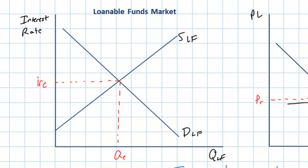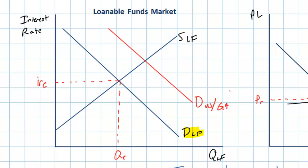The demand for loanable funds no longer represents only households and firms — it now also includes the government. When the government enters the market for loanable funds and borrows from private banks, the demand for loanable funds increases — we'll call this demand-with-G, indicating the increase in government spending financed through borrowing. This predictably drives up the equilibrium interest rate in the economy, as there is now more competition for the scarce funds available to the private sector.